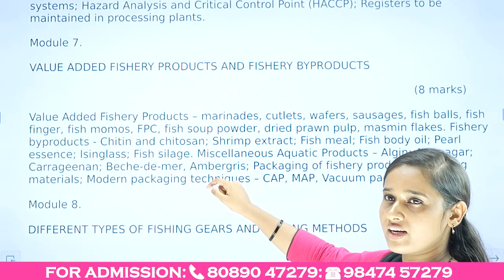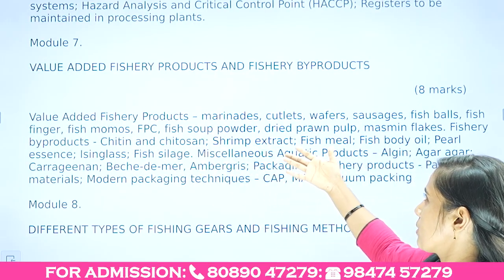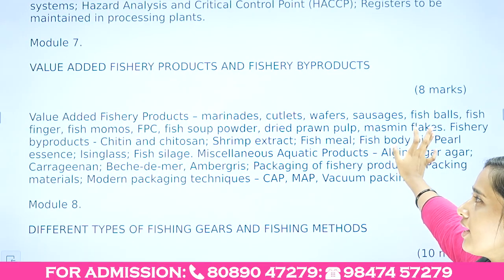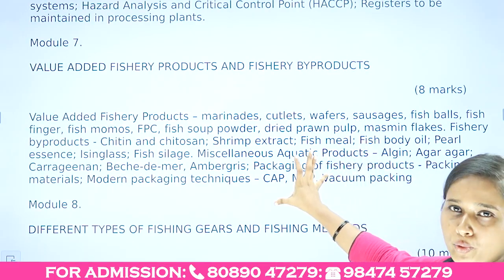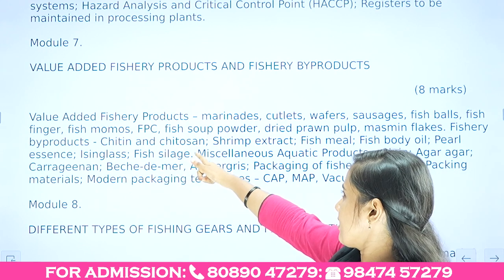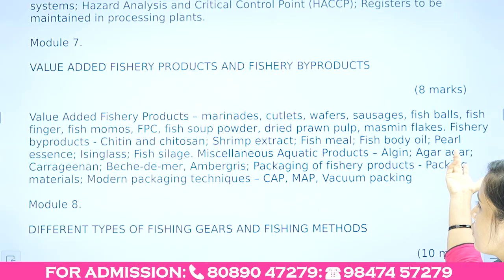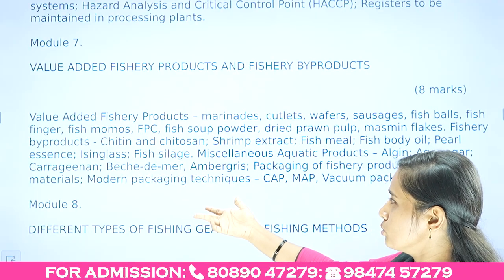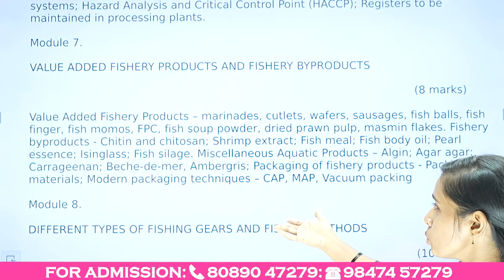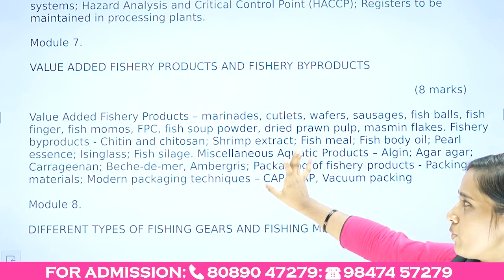Module 7, related to fisheries post-harvest technology, covers value-added fishery products and fishery by-products for 8 marks. Value-added products include marinates, cutlets, wafers, sausages, fish balls, fish fingers, fish momos, fish protein concentrate, fish soup powder, dry prawn pulp, and mince/mint flakes.